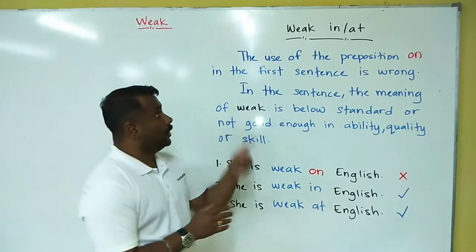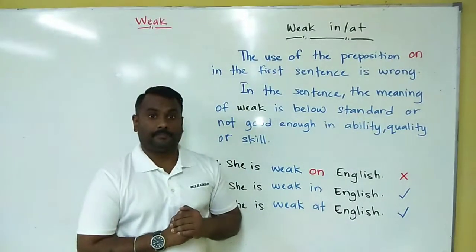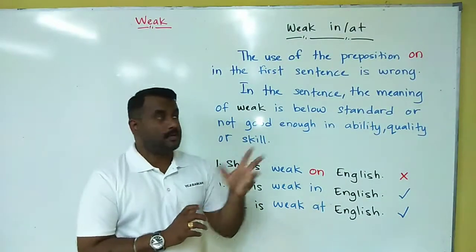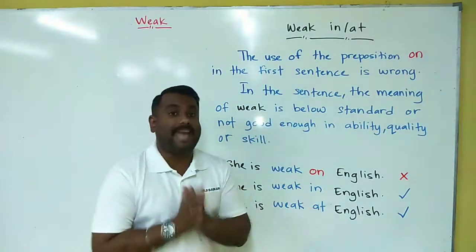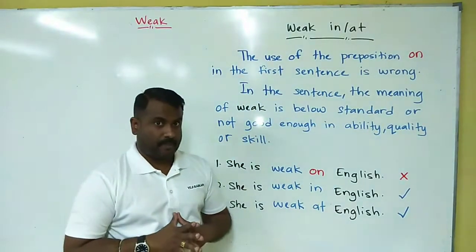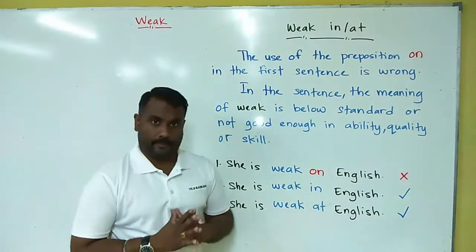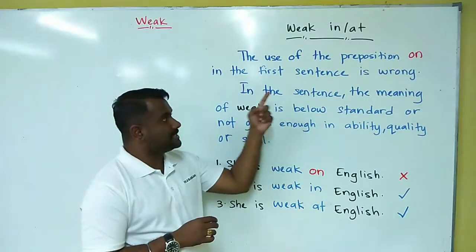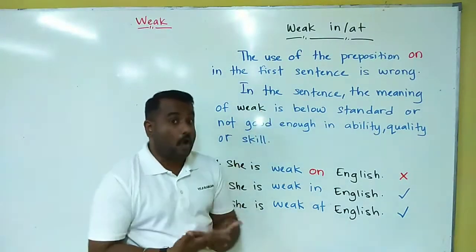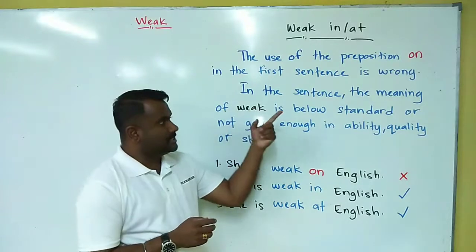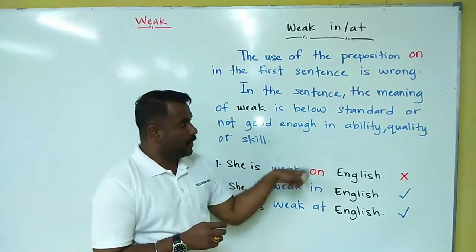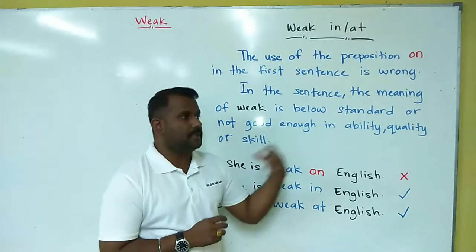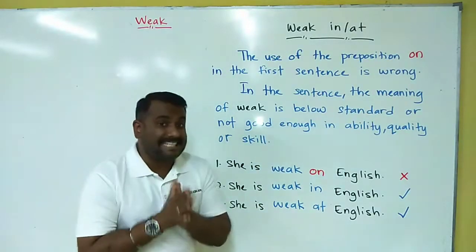Today we're going to look into 'weak'. So the actual prepositions we use would be 'weak in' or 'weak at'. Mostly we'll be using 'weak on'. So the use of the preposition 'on' in the first sentence is wrong. In the sentence, the meaning of 'weak' stands for not good enough in ability, quality or skill.